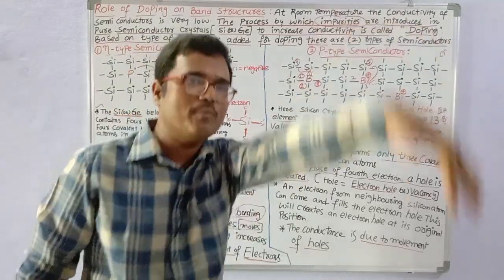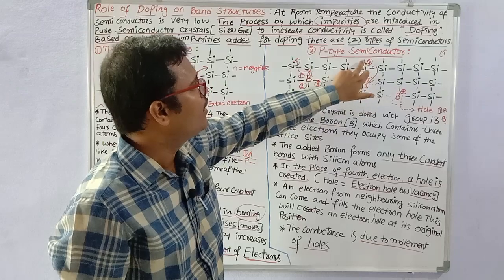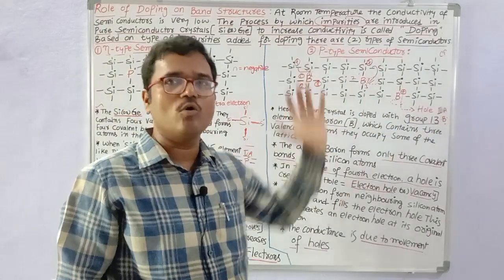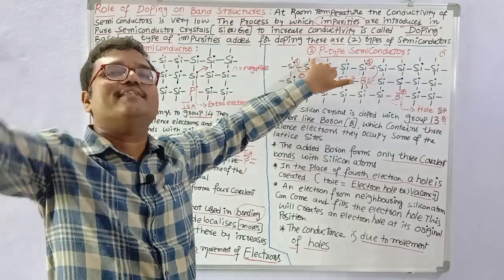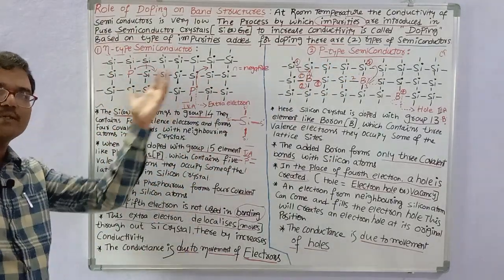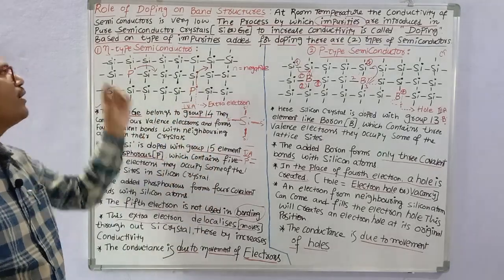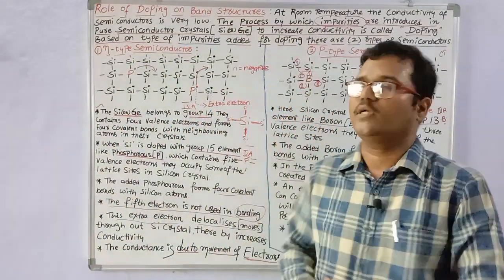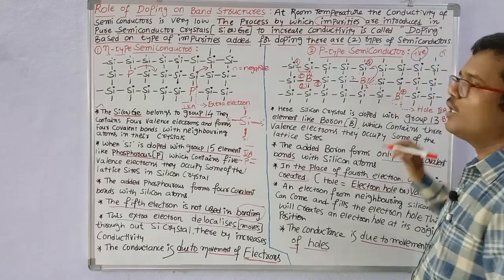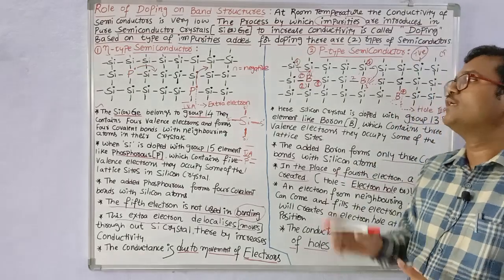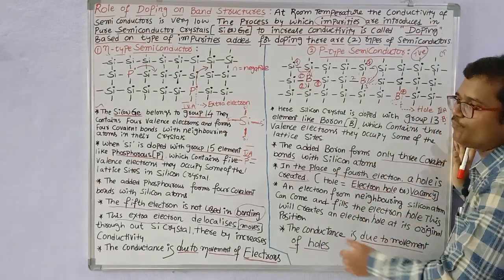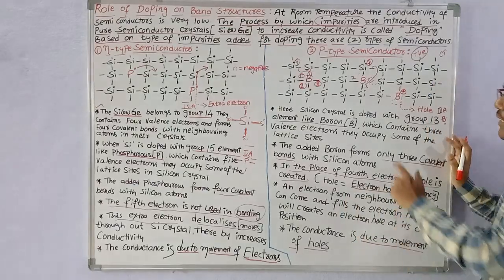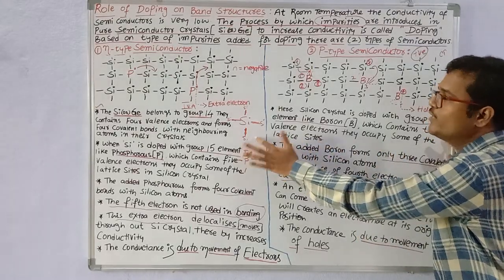The holes move through the crystal. When holes move, the charge is redistributed and a new hole is generated at the original position. These positively charged holes moving through the P-type semiconductor increase conductance. In P-type semiconductors, conductance increases due to positively charged holes, while in N-type semiconductors, conductance increases due to electrons. N-doping is more effective when compared with P-doping.